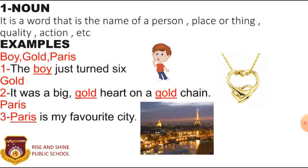The first one is Noun. It is a word that is the name of a person, place, thing, quality and action. For example: 'The boy just turned six. It was a big gold heart on a gold chain.' 'Paris is my favorite city.' In these sentences, Boy, Gold and Paris are Nouns.